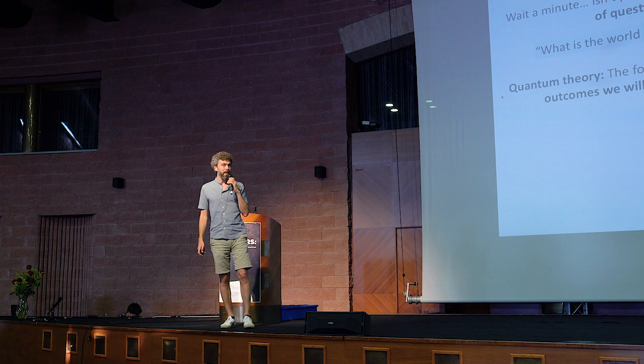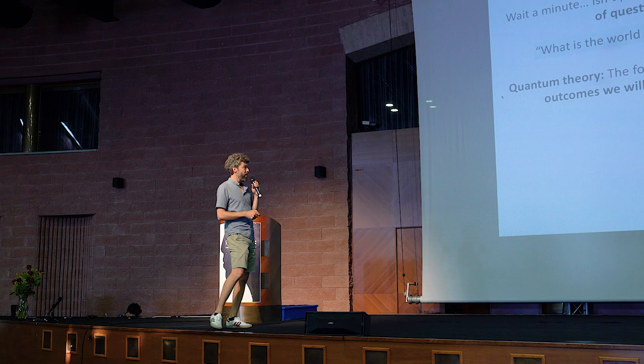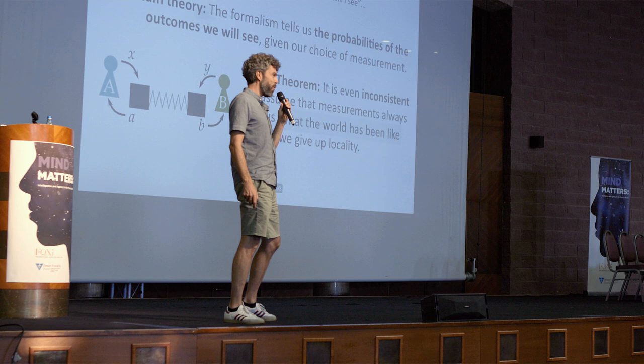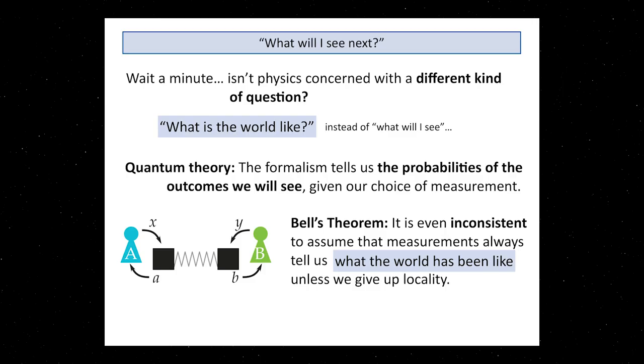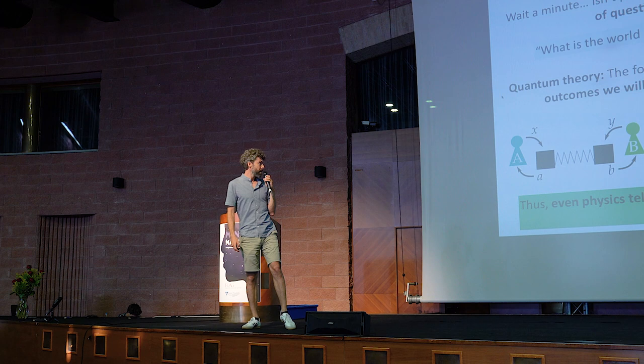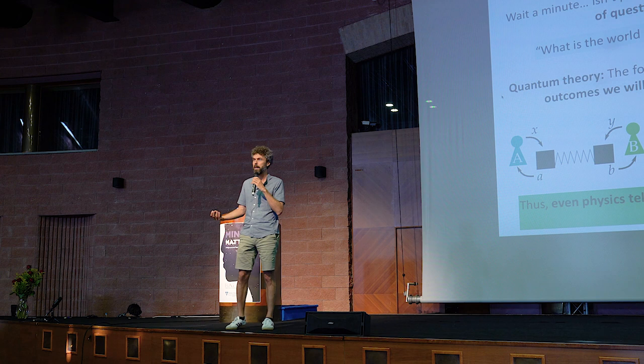If you look at quantum theory, you will find that indeed what the formulas tell you is the probabilities of outcomes that you will see if you decide to perform a certain measurement, not about what the world is like. You can make this rigorous by looking at Bell's theorem that tells you it is inconsistent to assume measurements always reveal how the world has been like before, unless you give up other principles like locality. So even physics tells us that this first-person question is the natural question to ask.